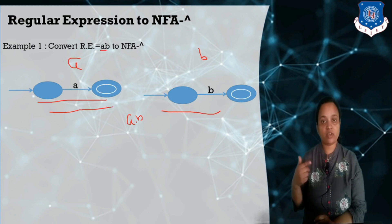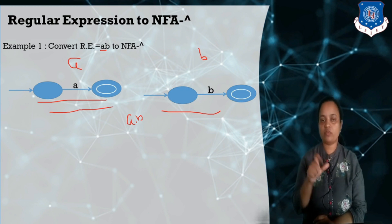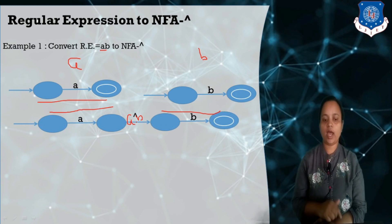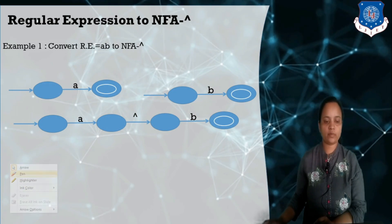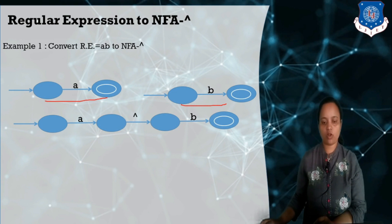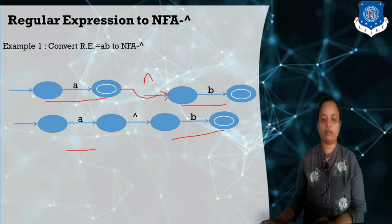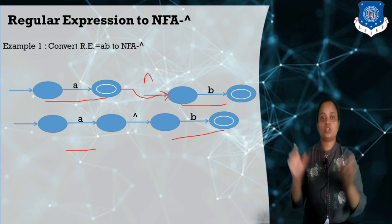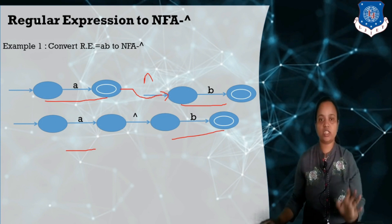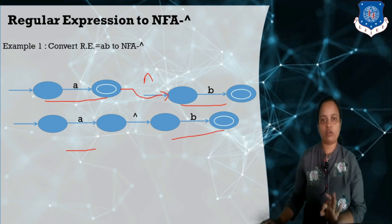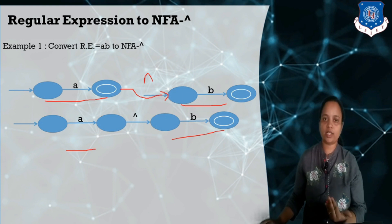How can we construct the NFA-null? Here, connecting these two, we are using the null value — null as an input. You can see I have connected these two states. I have connected them by a null input because it is an NFA-null. These two things are connected with the null input. This is called the concatenation operation on a dot b that we have performed, and this is the way we construct the NFA-null.